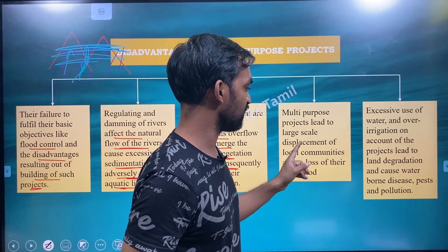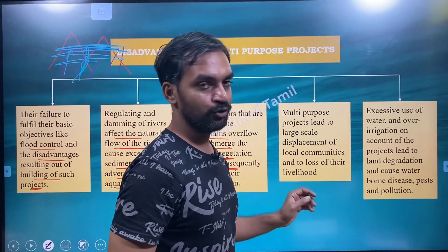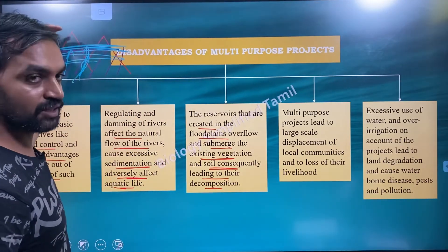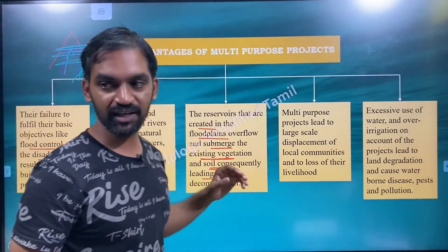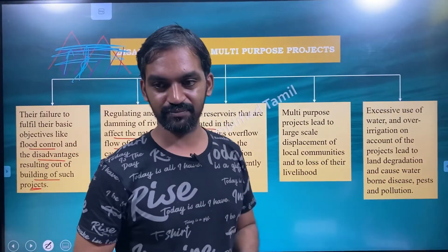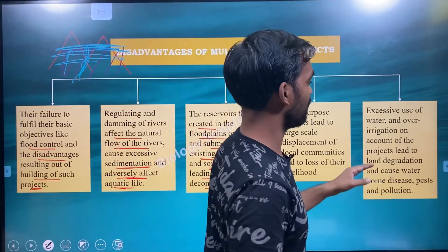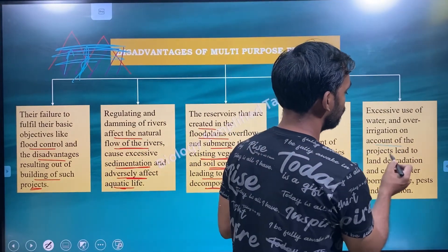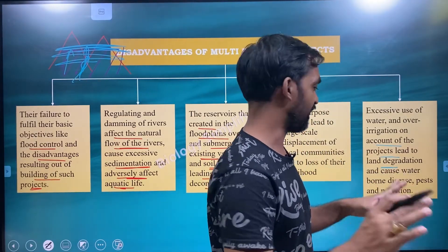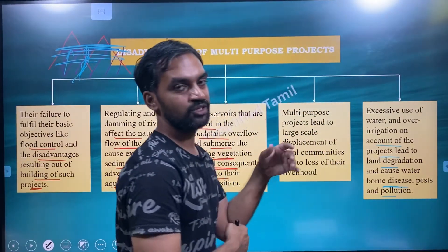Multi-purpose projects lead to large-scale displacement of local communities who lose their livelihood. Excessive use of water and over-irrigation on account of these projects leads to land degradation and causes water-borne diseases, pests, and pollution.